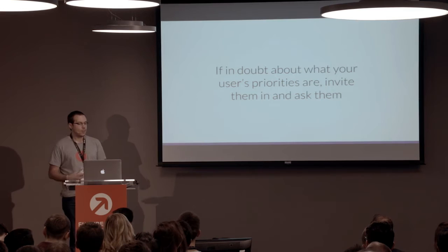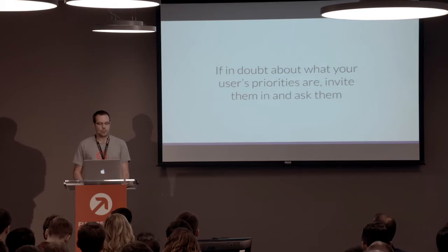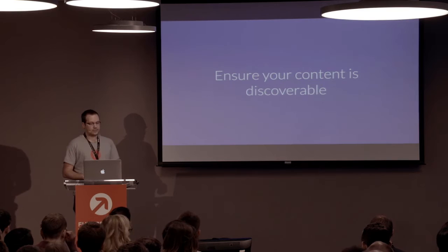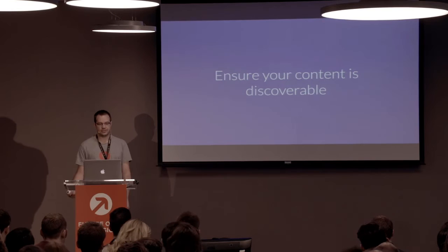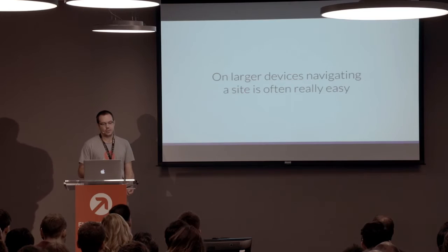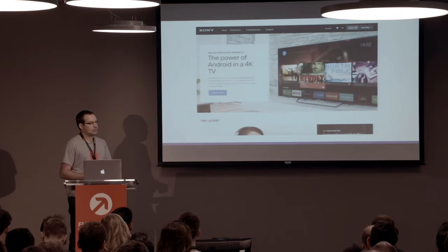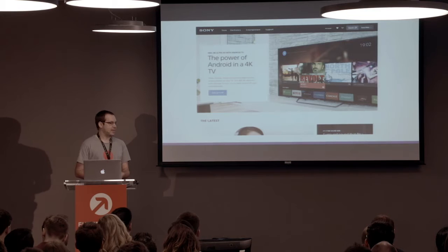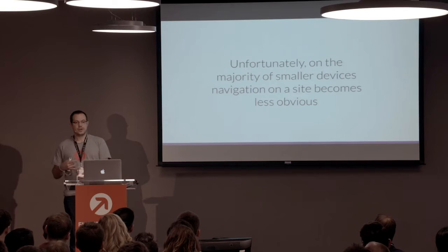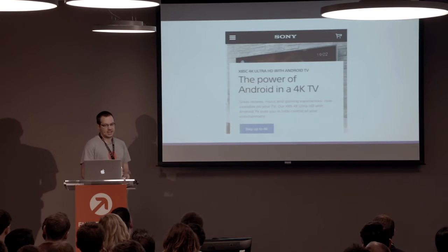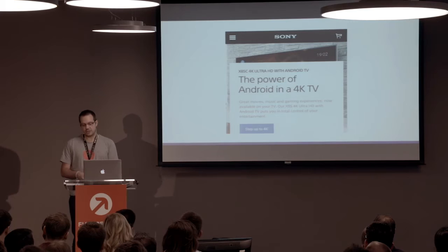If in doubt about your users' priorities, invite them in and ask them. While it's easy to make assumptions, the simplest way to be sure is to invite a number of users in — you don't have to build the interface to test it, just take them through your wireframes. Aside from prioritizing content, you should also look at how to ensure content is discoverable across a wide variety of devices. On larger devices, navigating a site is often really easy — the Sony site, for example, has very clear navigation covering the store, electronics, entertainment, and support, plus a search box. Unfortunately, on small sites, navigation becomes a lot less obvious, and the Sony navigation is completely obscured inside the burger menu, with search hidden inside it as well.